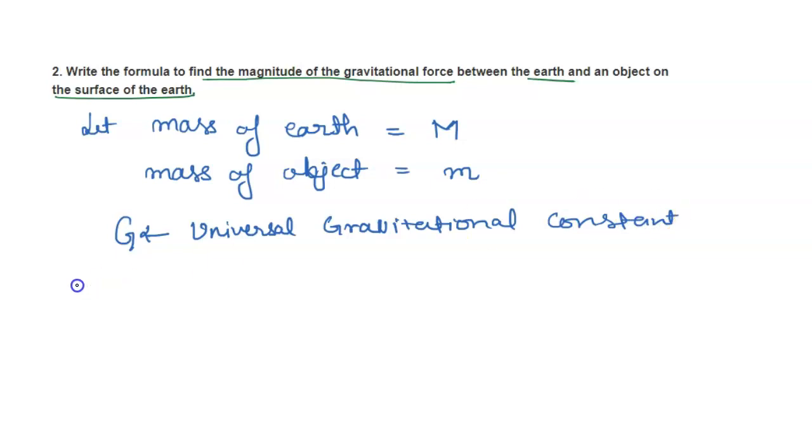The magnitude of force is represented by F. F is directly proportional to the product of the masses of the two objects and inversely proportional to the square of the distance.